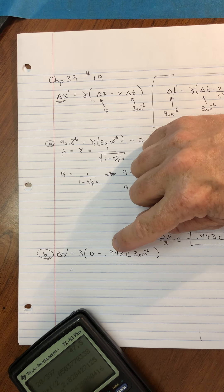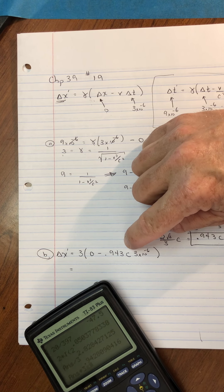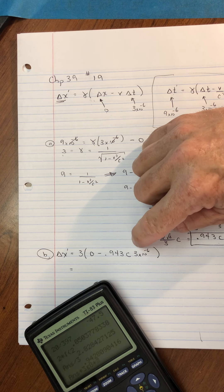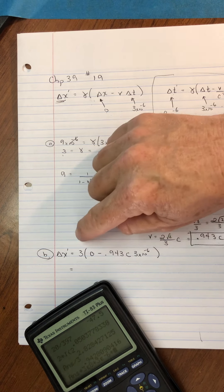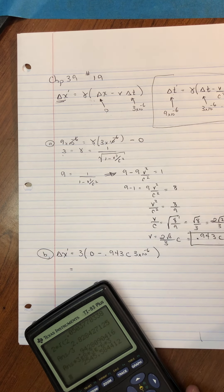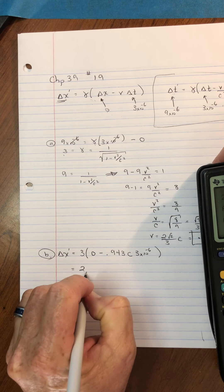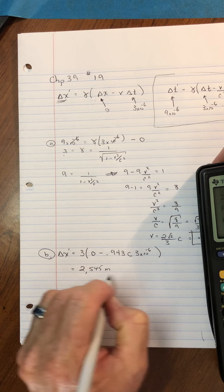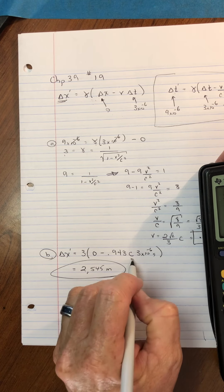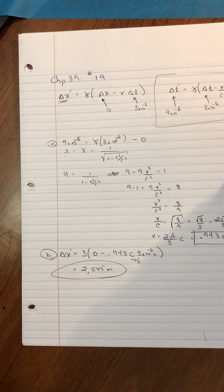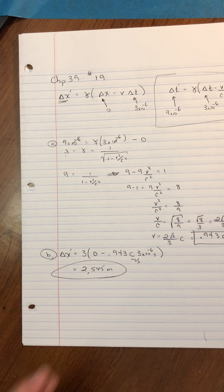And so grabbing my calculator here. I already have that number, I guess, in my calculator. So I'll just go times. And c is three times ten to the eighth. And then times three times ten to the negative six. And then times the gamma factor of three comes out to be 2,545 meters. I should check my units here. Time is in seconds, meters per second. Yeah. And so about 2,500 meters. Okay.